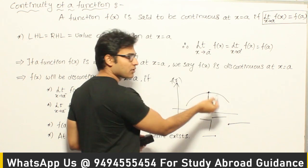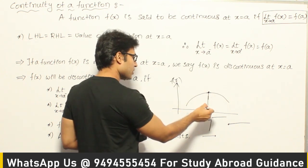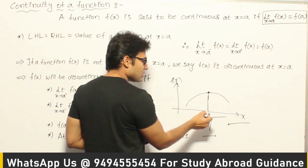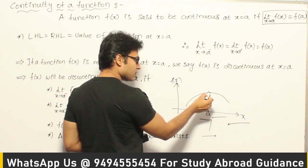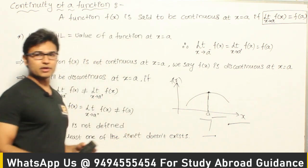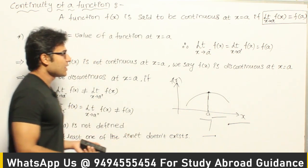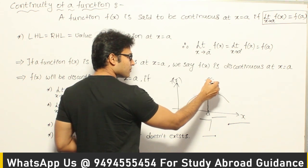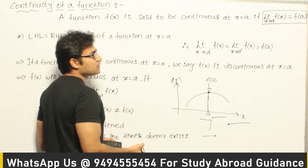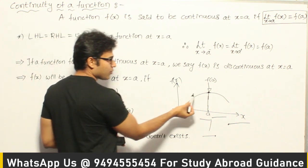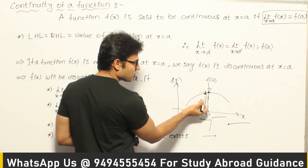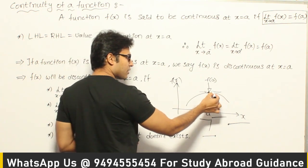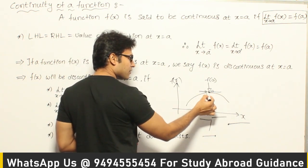This is the function we are talking about, and we are looking at a point a. At x = a, we want to see whether this function is continuous or not. We find the value of this point, which is f(a). The limit as x tends to a means as x approaches a — close to a, not at a — either from the left side or the right side.